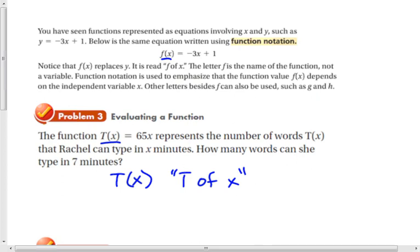So really all they're asking is what's 65 times 7. But this is a nice shorthand way of writing what the output is for this function, meaning how many words can Rachel type in 7 minutes. And that's called t of 7.